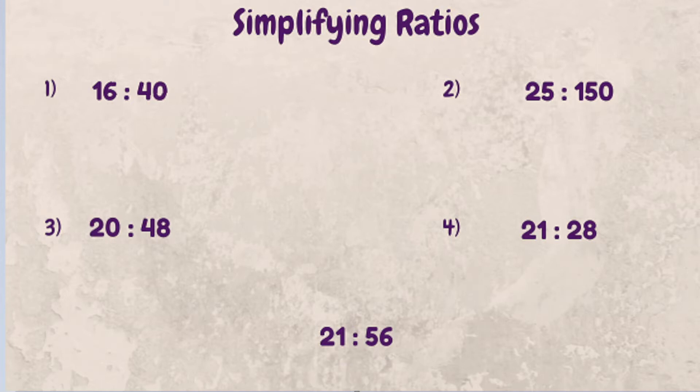So we're going to go over four examples today. The steps we're going to use are we're going to take our original ratio, each number in that ratio we're going to find all the factors, then we're going to find the greatest common factor between those two numbers in our ratio, and we divide both of our numbers by that greatest common factor.